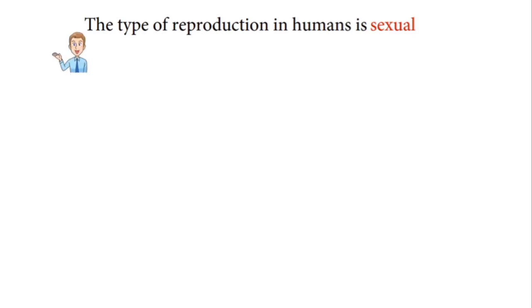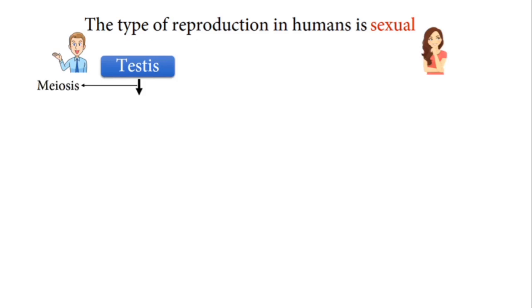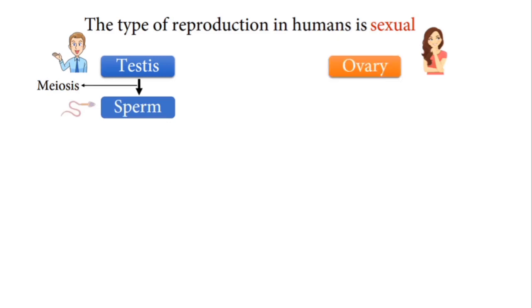Now let's jump into the video. The type of reproduction in humans is sexual — this is the kind of reproduction involving two parents, the male and the female. Basically, in the testes of males a kind of cell division known as meiosis occurs to produce sperm. Similarly, in the ovaries of females meiosis also occurs to produce eggs, also known as ova.